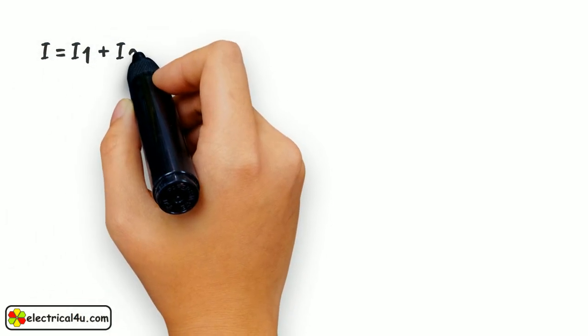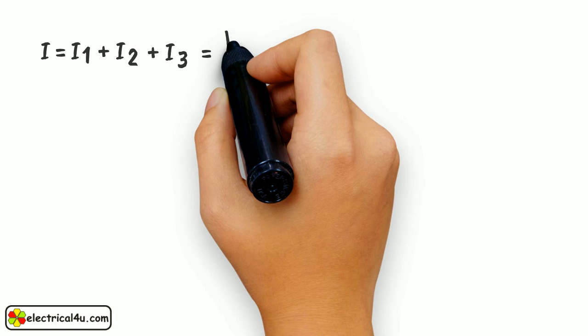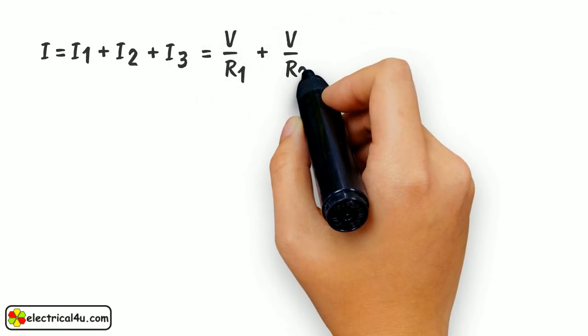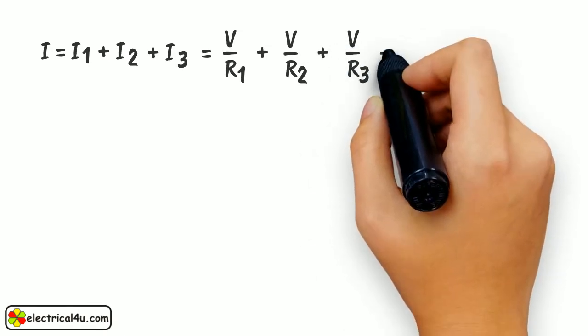As voltage V is appearing across each of these three resistors, applying Ohm's law we can write, I equals I1 plus I2 plus I3 equals V by R1, plus V by R2, plus V by R3. We say this is equation 1.